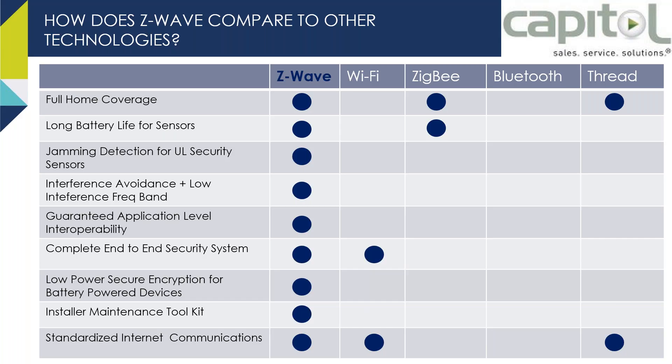Now let's compare Z-Wave to other protocols. For whole-home coverage, Z-Wave with its mesh network does it well. Wi-Fi depends on whether you have a wireless controller managing multiple access points — separate access points don't automatically mean whole-home coverage. Bluetooth doesn't have whole-home coverage. Thread is more of an international protocol you don't need to worry about much here.